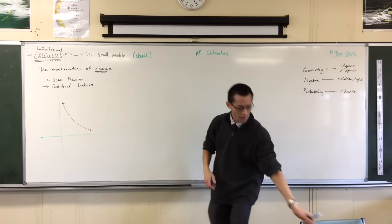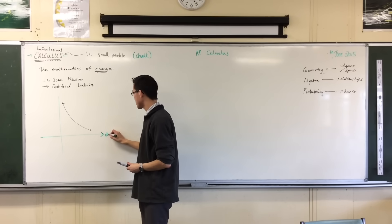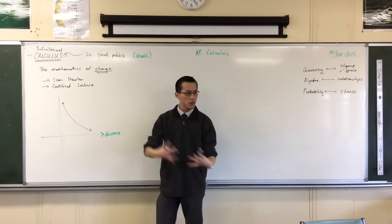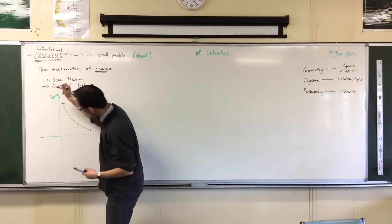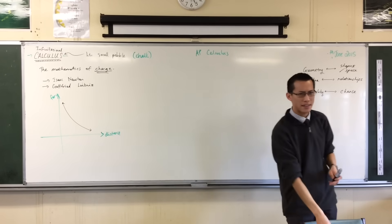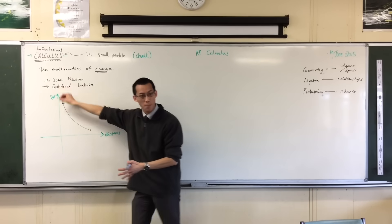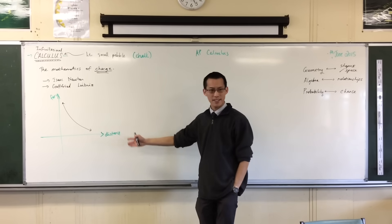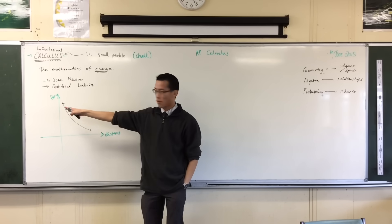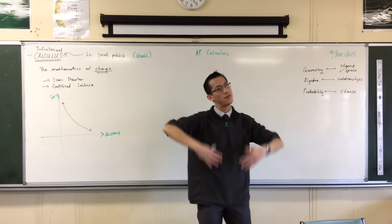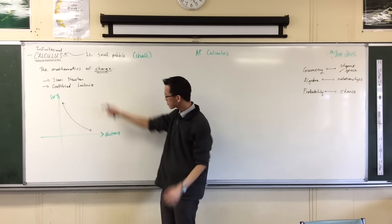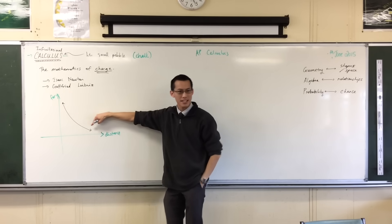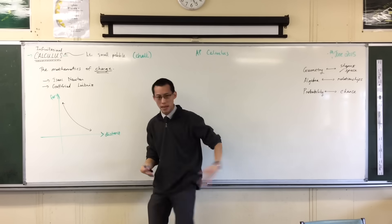So the further away you get from something, so if I have over here distance, as your distance increases, the force of gravity, and actually everything really, if you think of the electrostatic force, it's Coulomb's law I think, it gets smaller and smaller and it drops off like this, drops off quite fast. Now here is his problem. He's trying to work out how do these things relate to each other? How does gravity change over distance? This is the problem he's trying to solve.